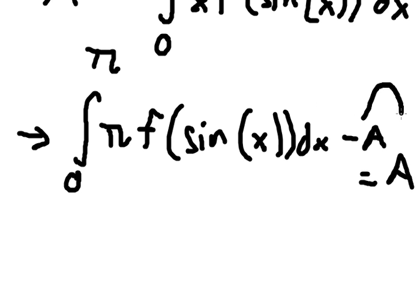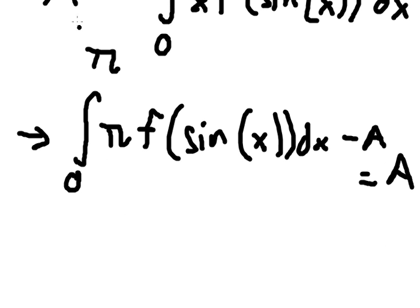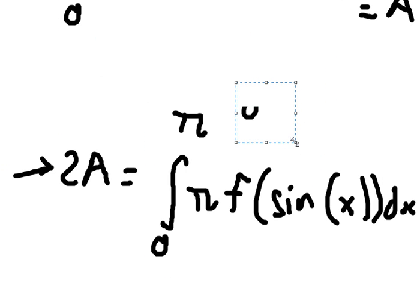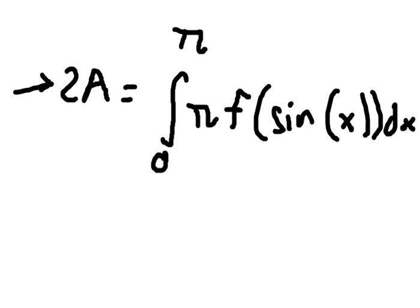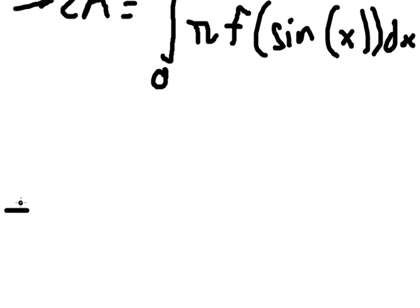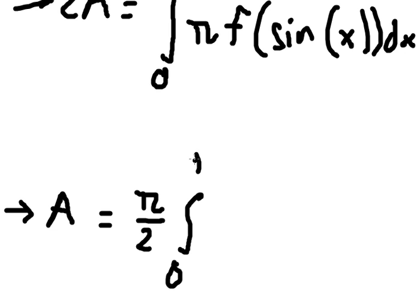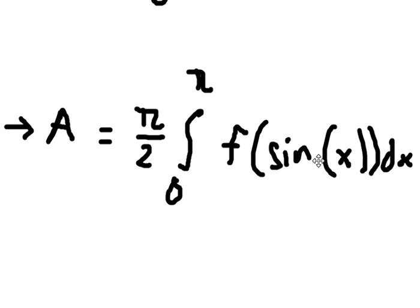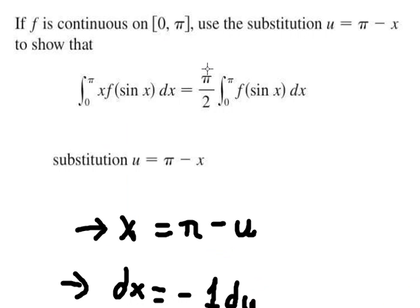So negative A, I will put on the right, so we have two A equals to this one. Next we divide both sides by number two. And here is the final answer, so we write it here to compare to the result at the beginning.